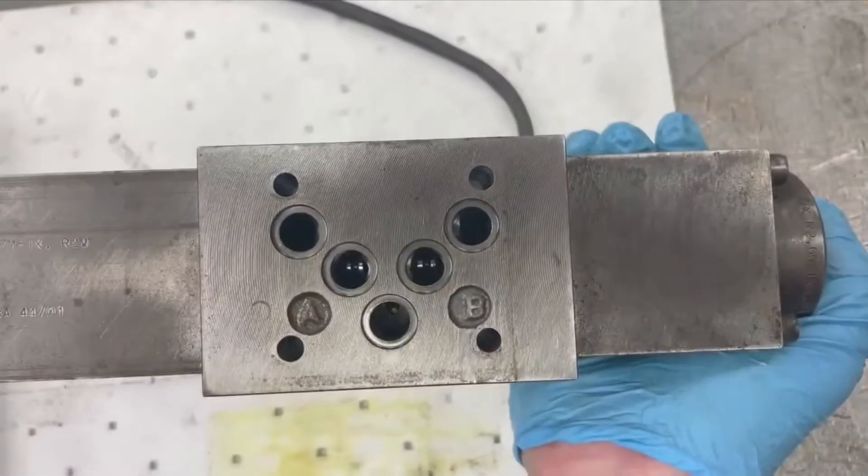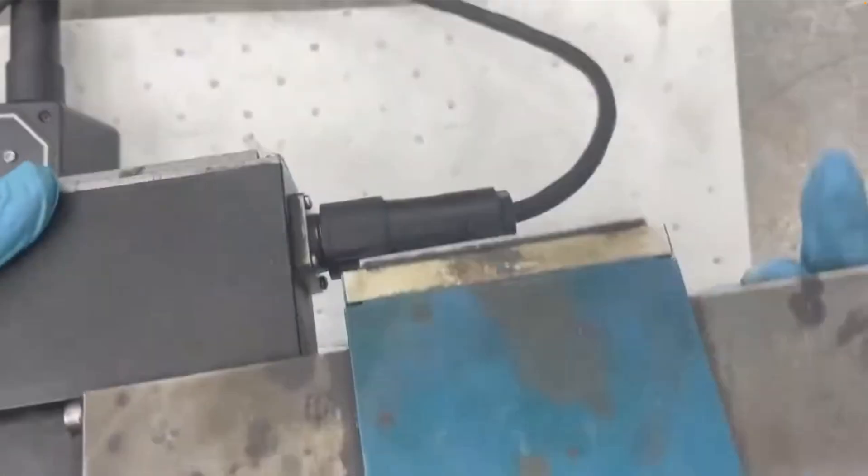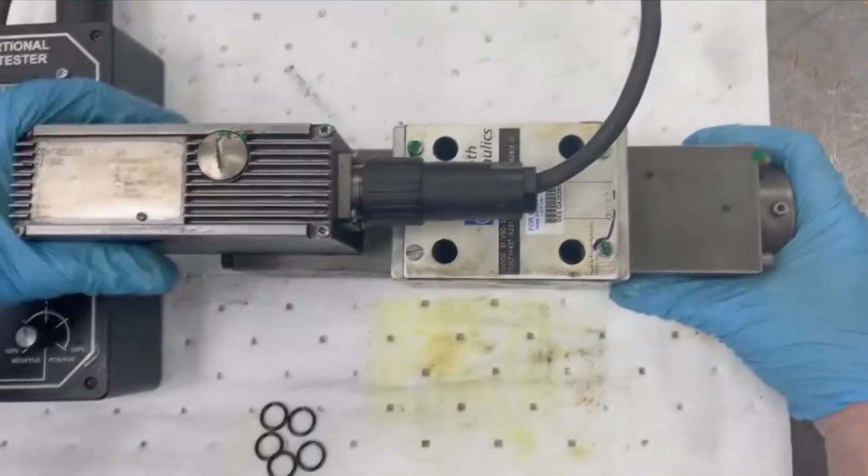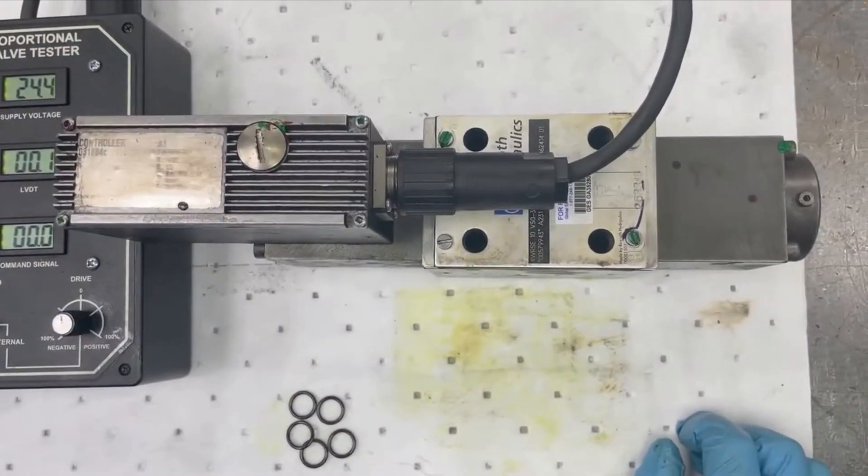So we're going to put this through a few more cycle tests. Then we'll disassemble the valve, service everything, change all the seals and components, service the outboard electronics for out of tolerance on aging electronics and parts, and then retest everything. And this valve will be fully repaired, tested, and ready for the customer.